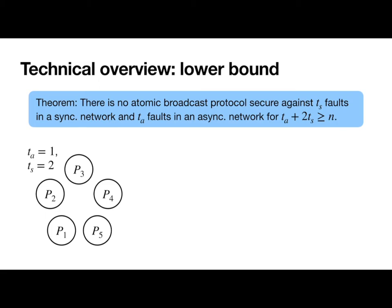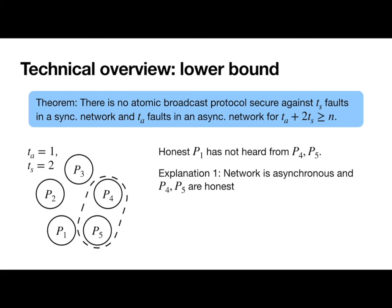So just to talk things through with a bit of an example, let's assume towards a contradiction that we do have a protocol that achieves these properties for N equals 5, TA equals 1, and TS equals 2. And suppose that P1 is honest and hasn't heard from P4 and P5. One explanation is that the network is asynchronous and P4 and P5 are honest. Their messages have just been delayed. On the other hand, it could be that we're in a synchronous network and P4 and P5 are malicious and just refusing to participate.